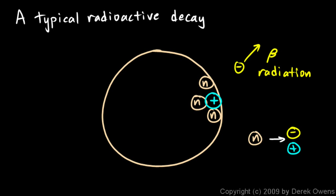Now remember, the atomic number of an element is the number of protons that it has. And the number of protons — the atomic number — determines what element it is. So this is now a different element. It now has one more proton than it used to.